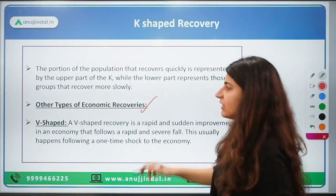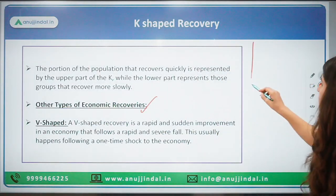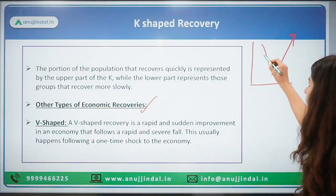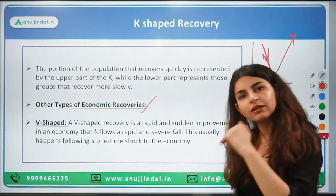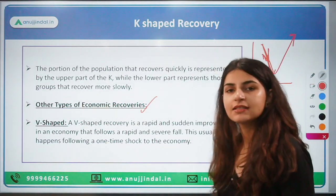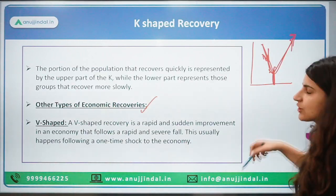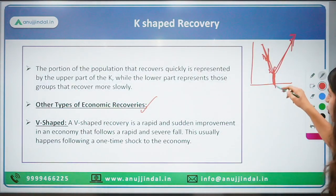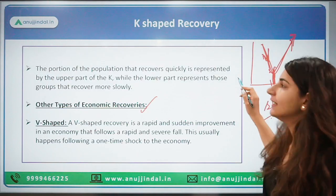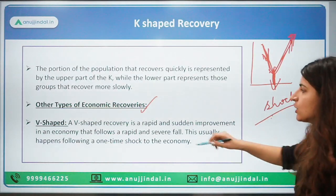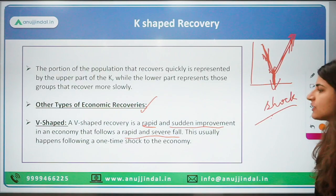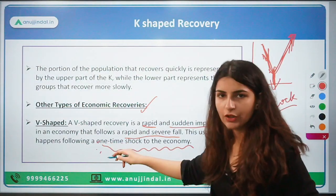Now let's look at other types of economic recoveries. The first is V-shaped recovery. Because of any shock in the economy, there is a fall in growth, but either the fall is temporary or because of steps taken by the government, growth suddenly increases after reaching the lowest point. V-shaped recovery is a rapid and sudden improvement in an economy that follows a rapid and severe fall, usually following a one-time or temporary shock.